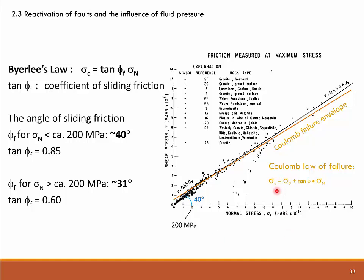We also see here the similarity of Coulomb's Law of Failure — it is almost identical. The critical shear stress is also the tangent of the internal angle of friction times normal stress. The difference is that for Coulomb's Law of Failure, we need to add the cohesive strength. For the reactivation of fractures according to Byerlee's Law, we don't have to do that because the fracture has already formed — cohesion has already been lost. This is why Coulomb's Law does not start at the origin but at the elevated cohesive strength, typically 20 to 40 MPa.